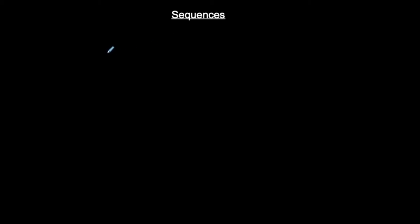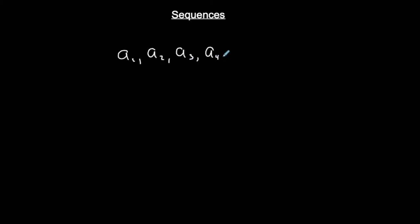Let's represent the general term for sequences. We have a₁, a₂, a₃, a₄, and aₙ. This is a list of numbers where each of these represents a number, and that list of numbers represents a sequence. So this is an example of a sequence in general.